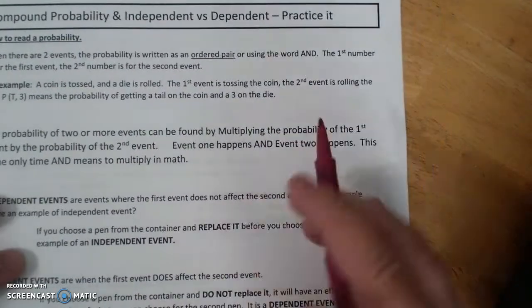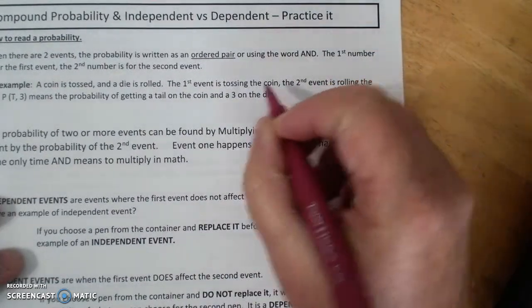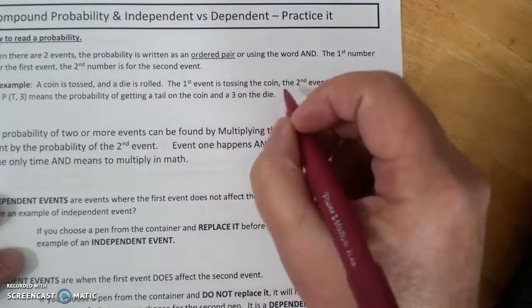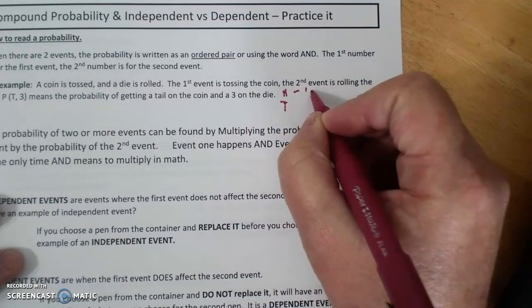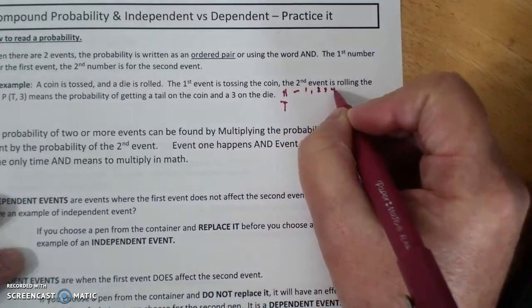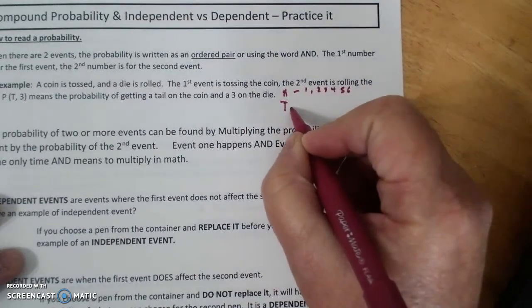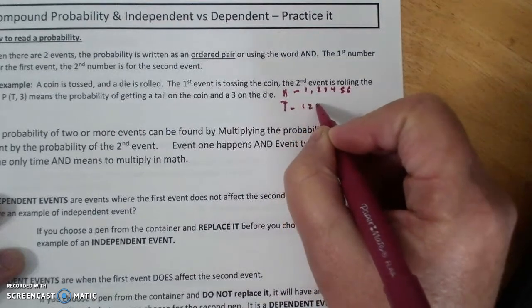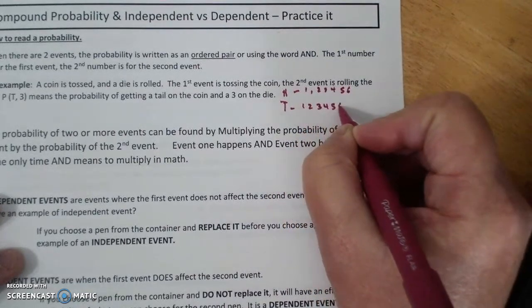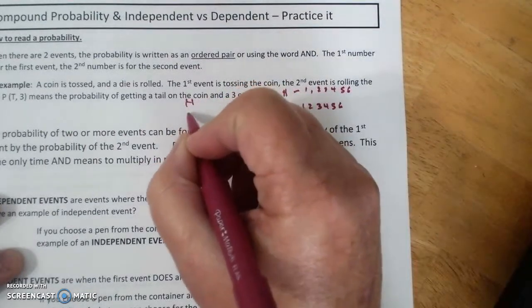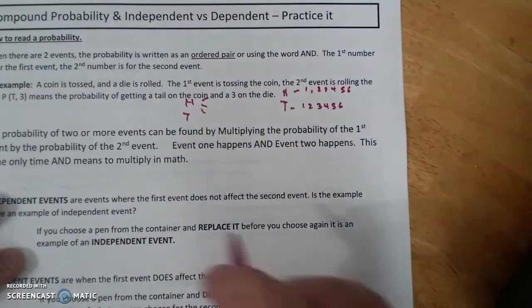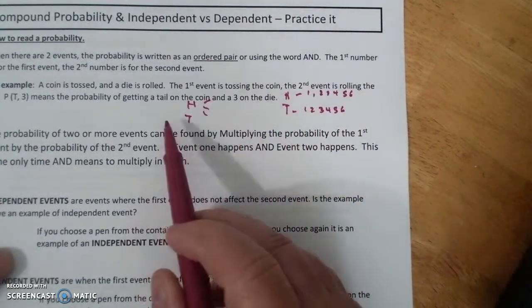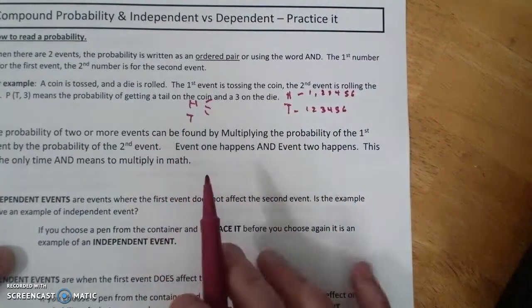So when you did your tree diagrams, tossing a coin gives you H, T, and then that one had one, two, three, four, five, six. I didn't leave myself enough room. One, two, four, five, six. That would actually be a branch like that, a bigger branch. So you would have to find out the probability.